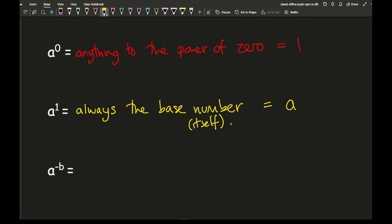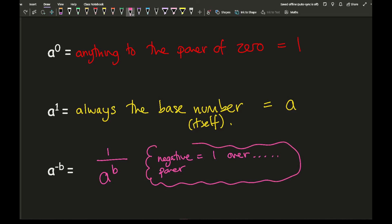A negative power means the reciprocal — it simply makes it 1 over. So a to the power of minus b equals 1 over a to the power of b. For example, 7 to the power of minus 2 is 1 over 7 squared, which simplifies to 1 over 49.